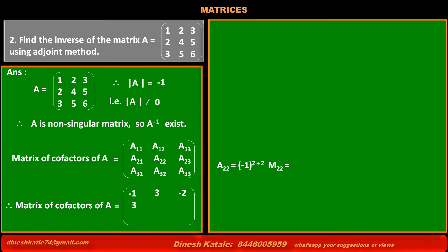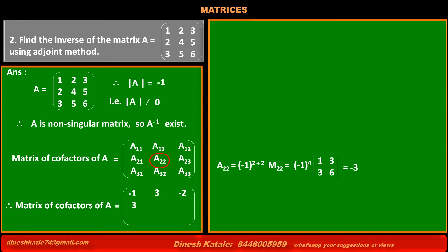Cofactor of element at second row, second column, A22 = (-1)^(2+2) × minor M22 = (-1)^4 × (1×6 - 3×3) = 1 × (6 - 9) = -3. Thus the value of A22 is -3.